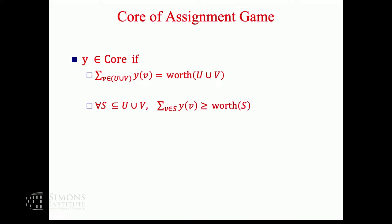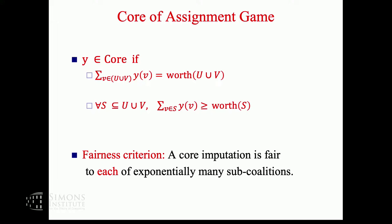So what kind of fairness criteria does this way of sharing the profit satisfy? It is fair to each of the exponentially many sub-coalitions. But it has some drawbacks. In the assignment game, a coalition consisting of only one man or one woman makes zero money because you need an entire team to enter the tournament. So it makes no promises to individual players.